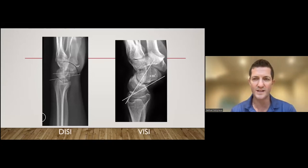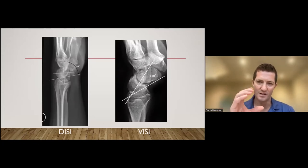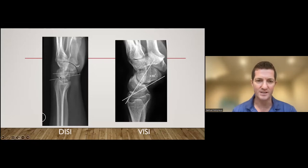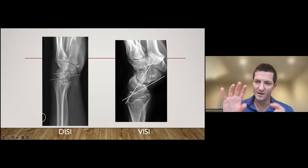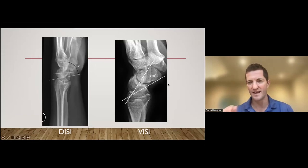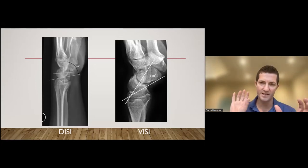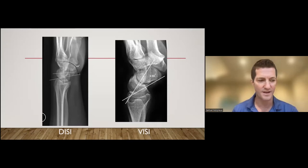That's what gives you this DISI and VISI deformity. A dorsal intercalated segmental instability just means that intercalated row, that first row is pointing dorsally. That means that something has given between the end of the scaphoid and the lunate. So it could be a scaphoid fracture, it could be a scapholunate injury. When you look at the scaphoid, it looks more flexed than it should and the lunate is facing backwards. If you injure between the lunate and the triquetrum, then the lunate flexes and you get a volar intercalated segment instability. The triquetrum goes into extension and the lunate follows the scaphoid into volar angulation.